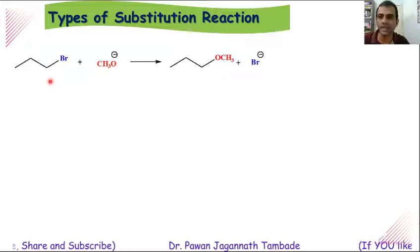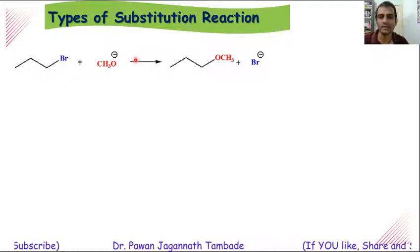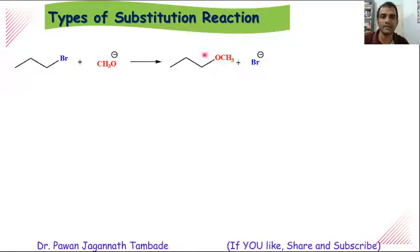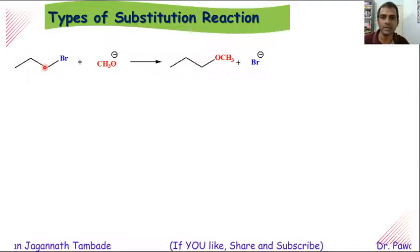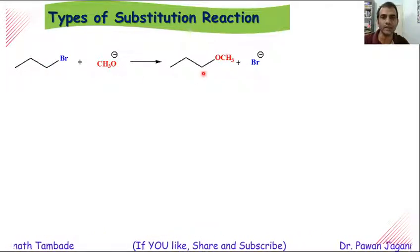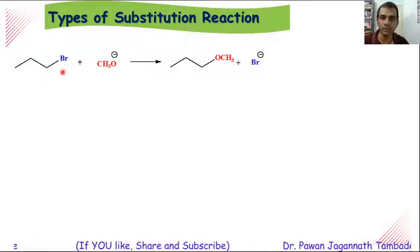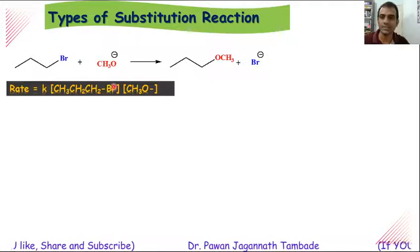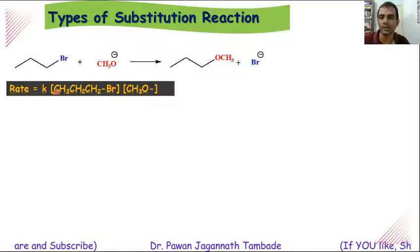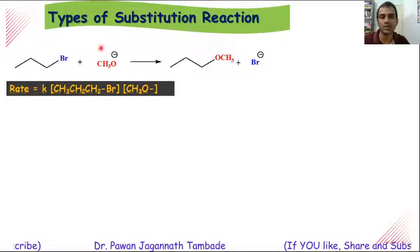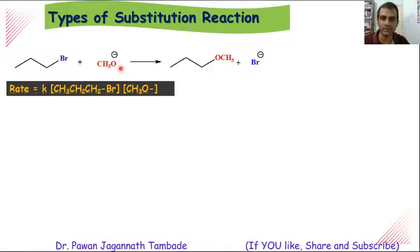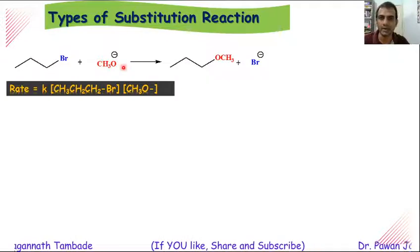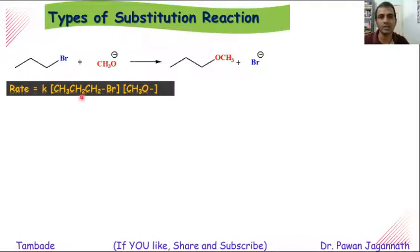Now, if you look at this reaction, this alkyl halide is allowed to react with this nucleophile and we can get this type of product. This is our starting material, this is the nucleophile, this is the product, and this is the leaving group during this reaction. It has been observed that the rate of this reaction depends upon concentration of substrate and concentration of nucleophile as well — if you change the concentration of substrate or nucleophile, there is a change in rate of reaction.